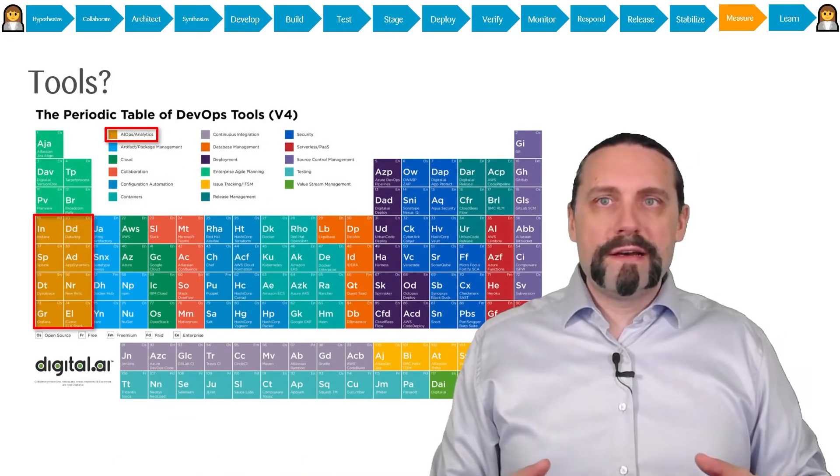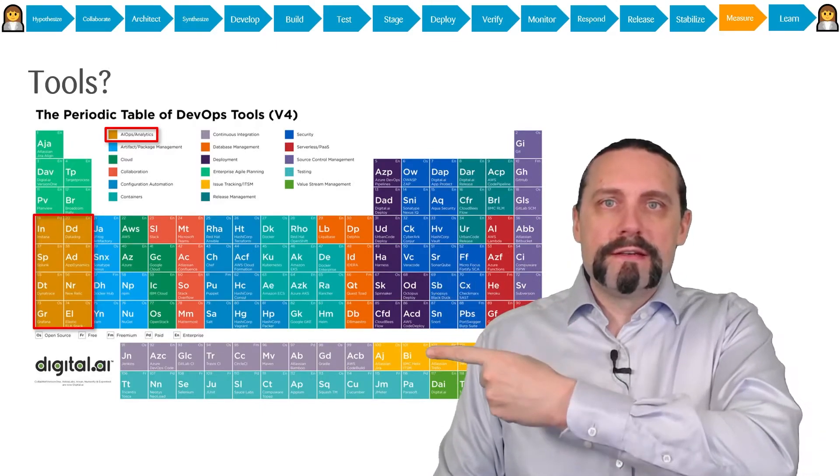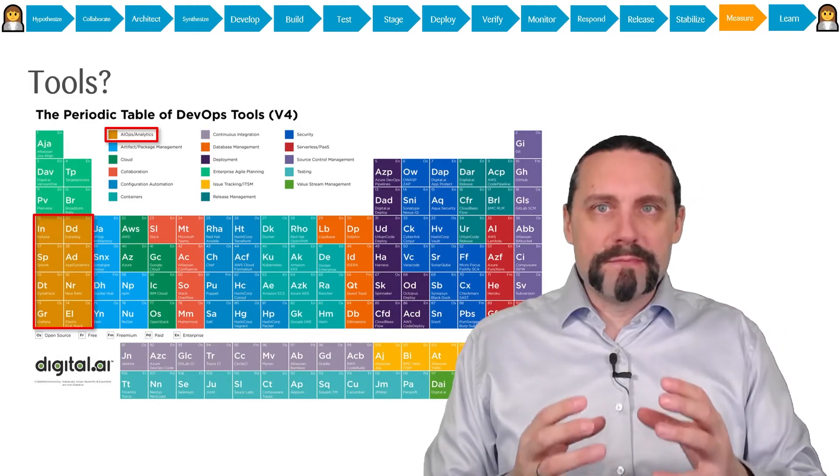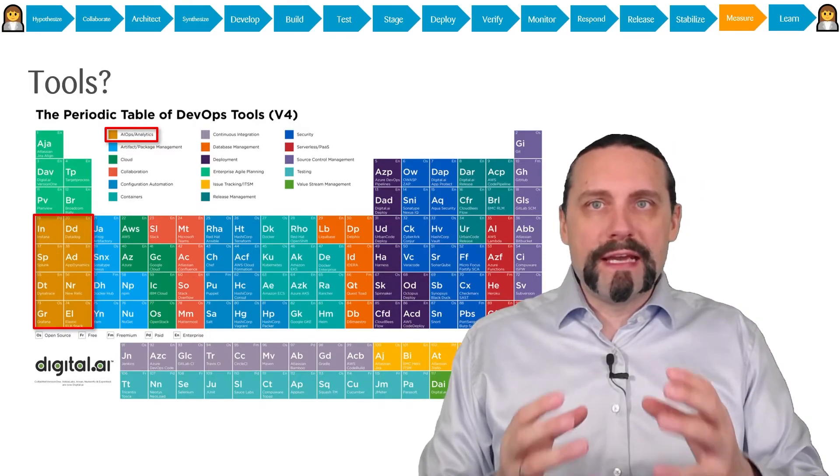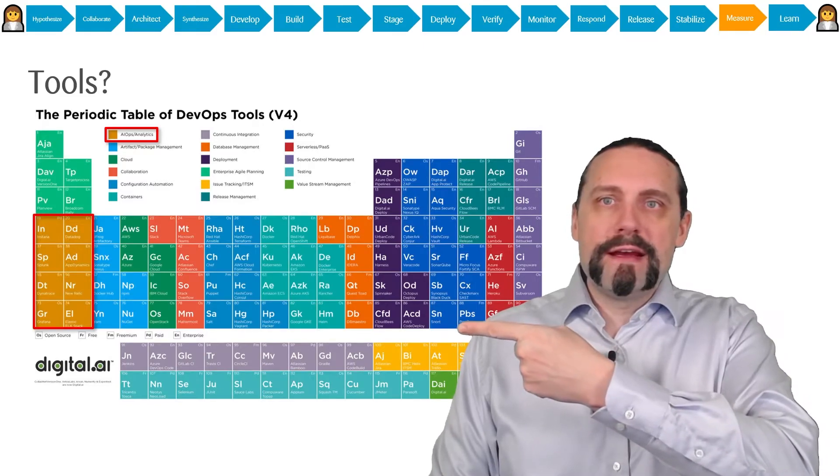Here we have the periodic table of DevOps tools which you can see here. And the tools we can use for the measure steps are the AIOps and analytics tools which you can see there in orange.